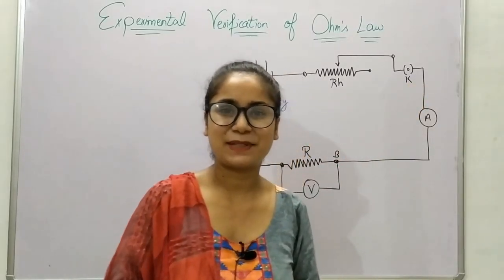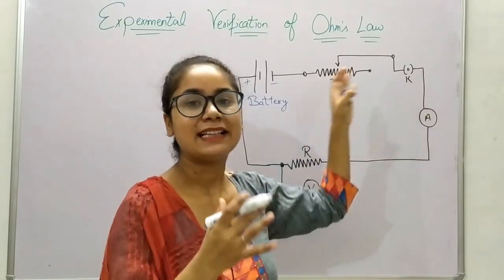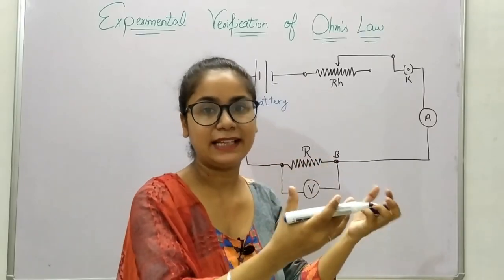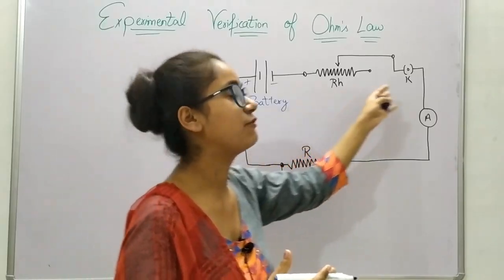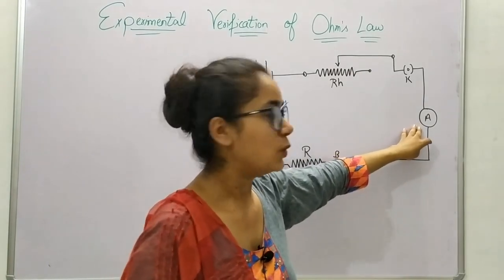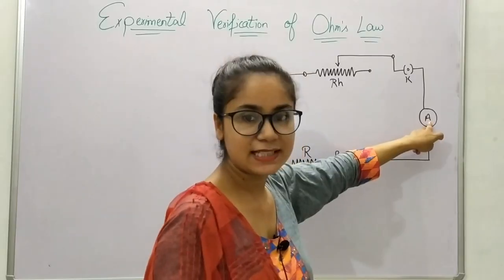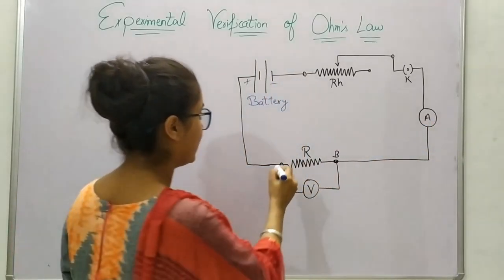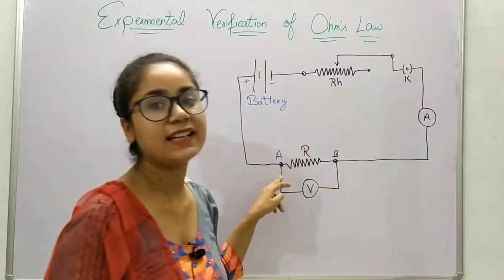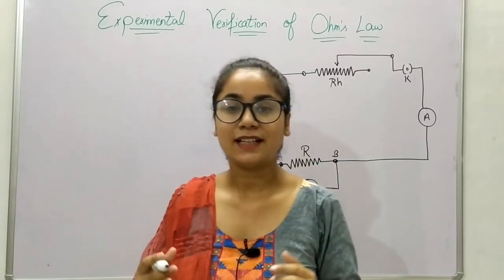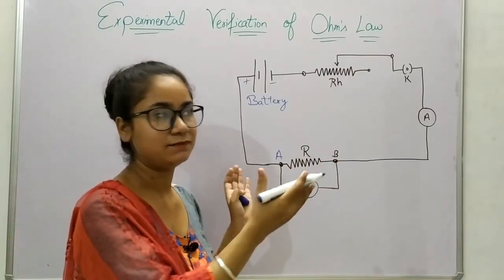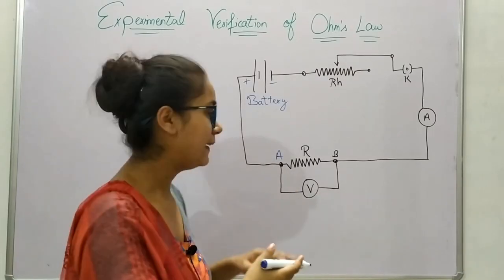If we increase or decrease the resistance, there would be a respective change in the current. Then comes the key. When we plug in the key, the battery would start conducting and current will start flowing through the electric circuit. Then comes the ammeter, which has the symbol 'A' here.